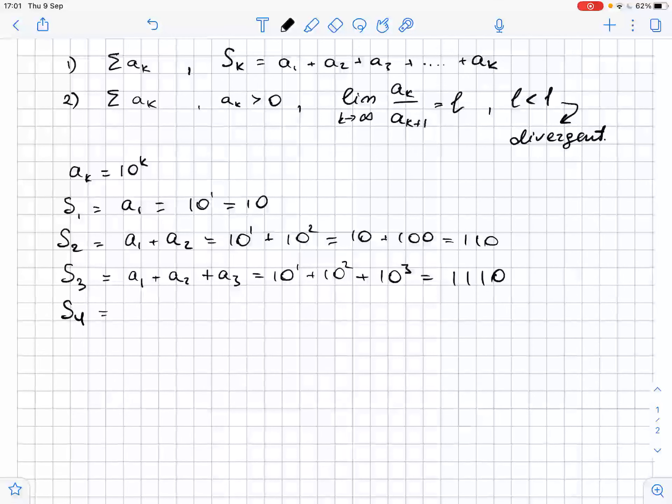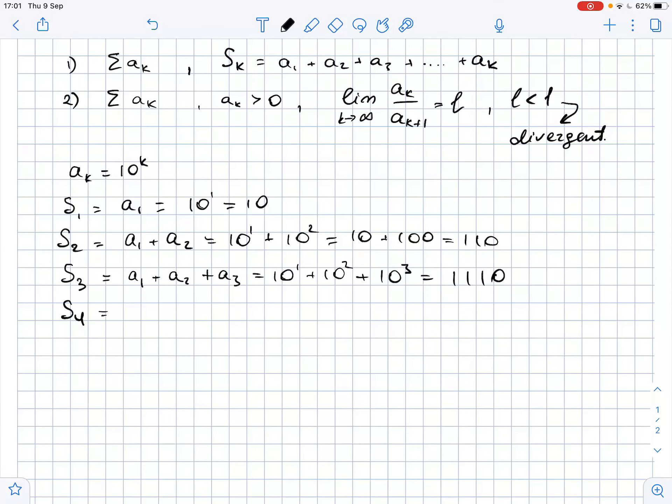And S4 equals the sum of the first four terms, so this is A1 plus A2 plus A3 plus A4, and this equals 11,110. So we have found the first four partial sums, they're right here, I'll highlight them.